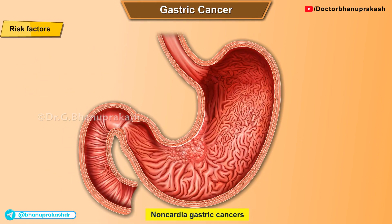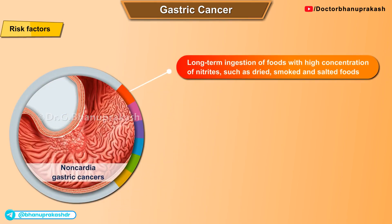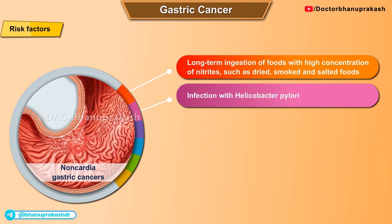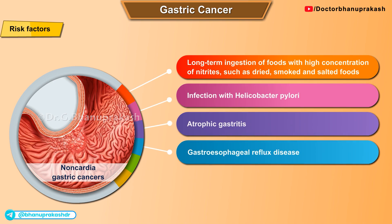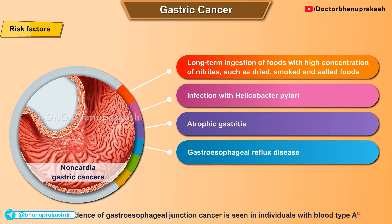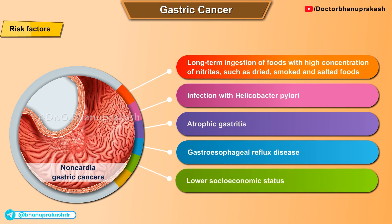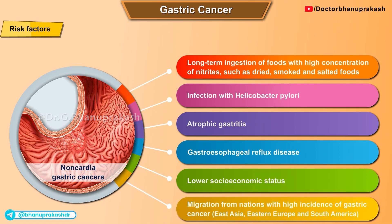Risk factors for development of non-cardia gastric cancers include long-term ingestion of foods with high concentration of nitrates such as dried, smoked, and salted foods; infection with H. pylori; atrophic gastritis; gastroesophageal reflux disease for cancers of the gastroesophageal junction; higher incidence in individuals with blood type A; lower socioeconomic status; and migration from nations with high incidence of gastric cancer, including nations in east Asia, eastern Europe, and South America.